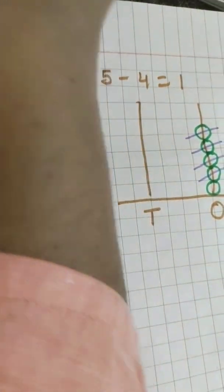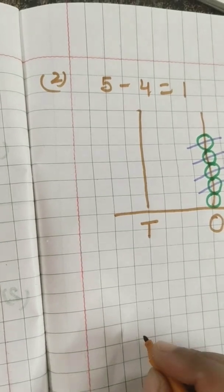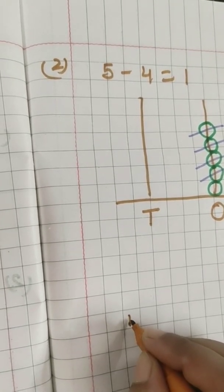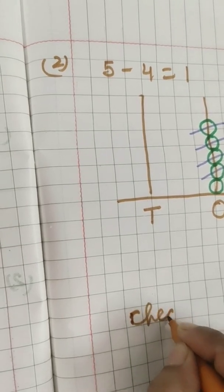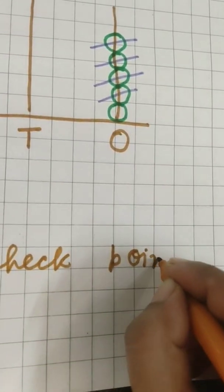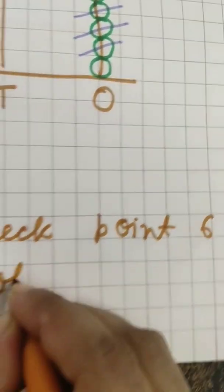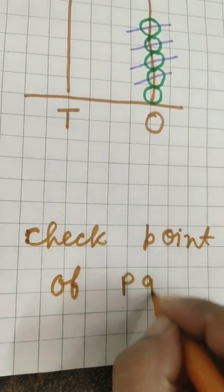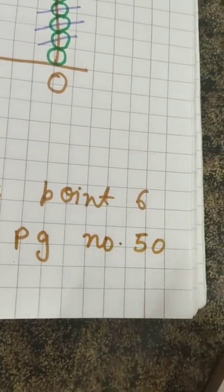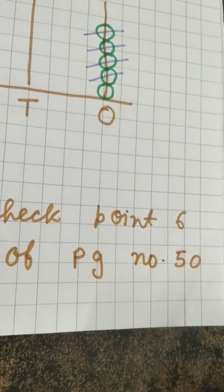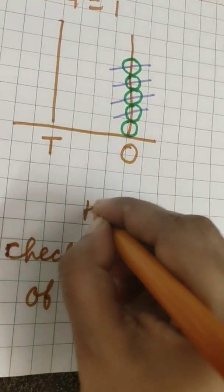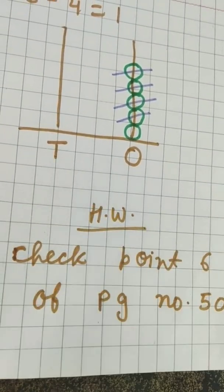Very good, children. And children, your classwork is checkpoint 6 of page number 50 of maths course book. Got it, children? This is your homework.